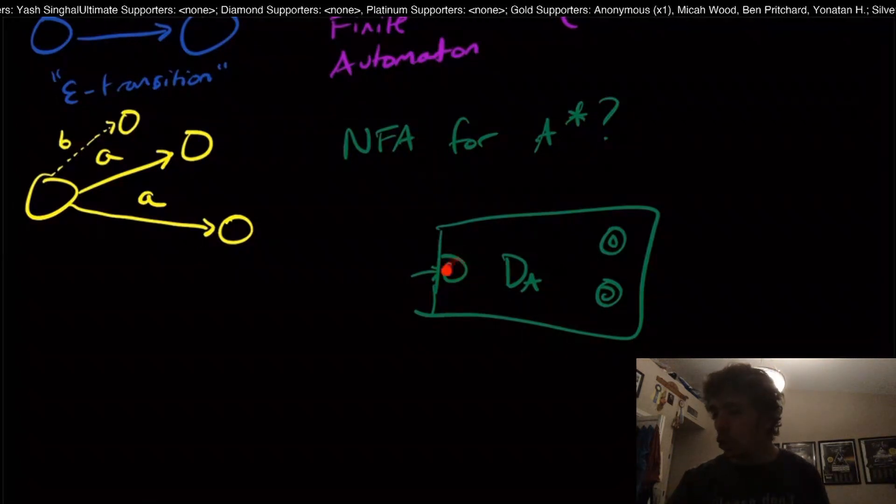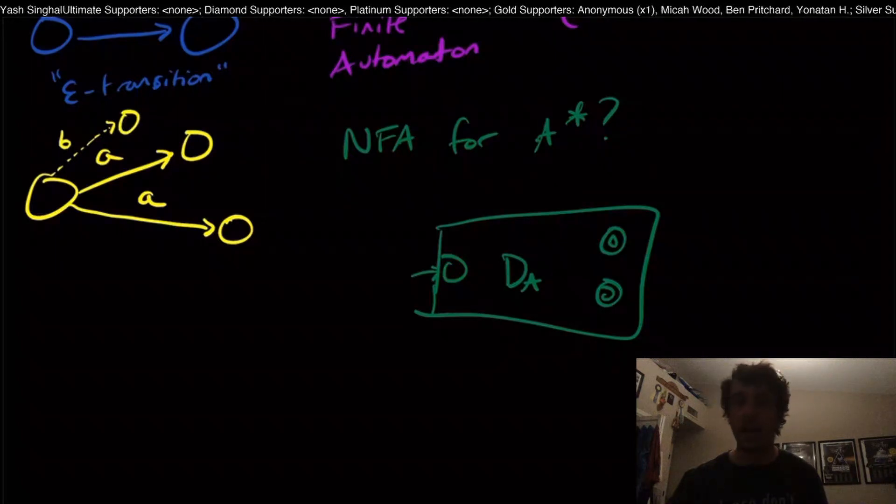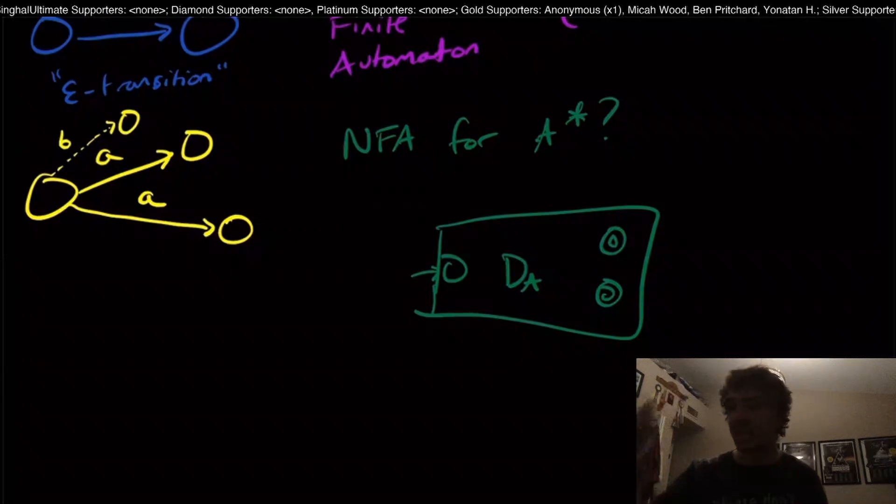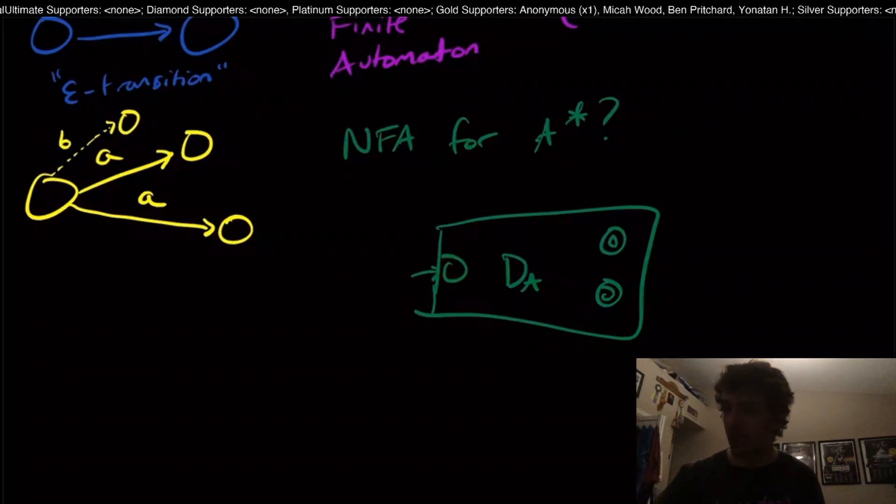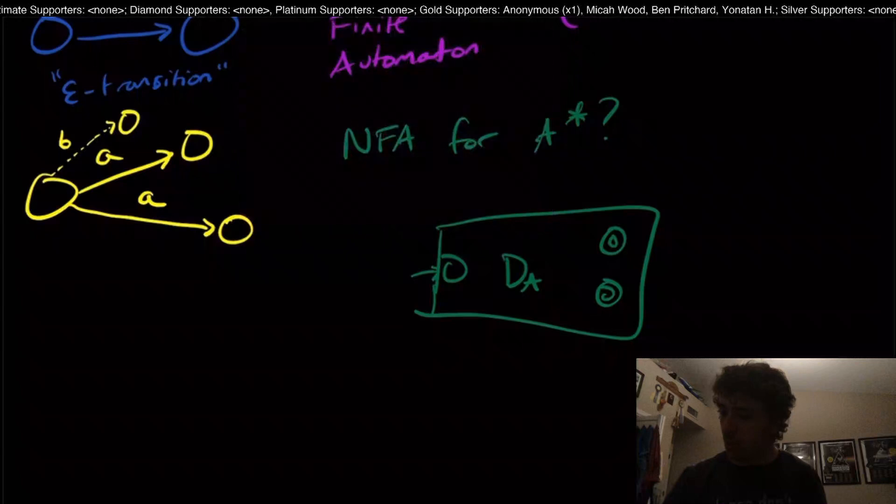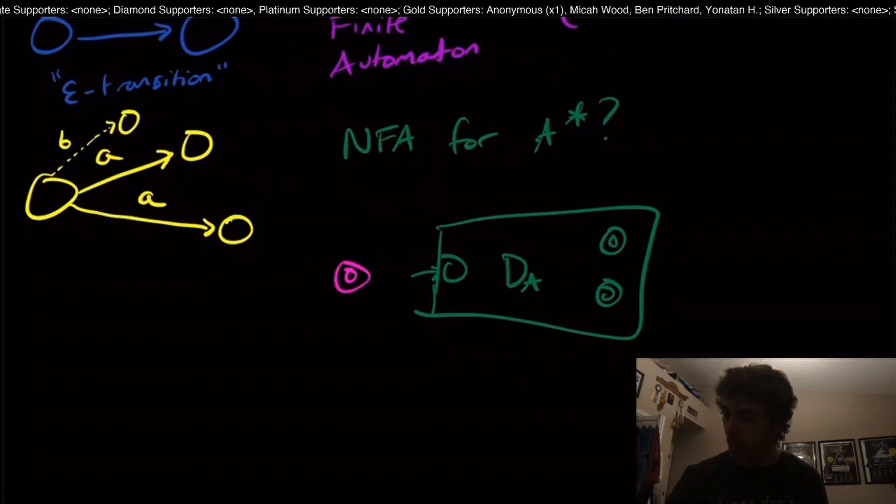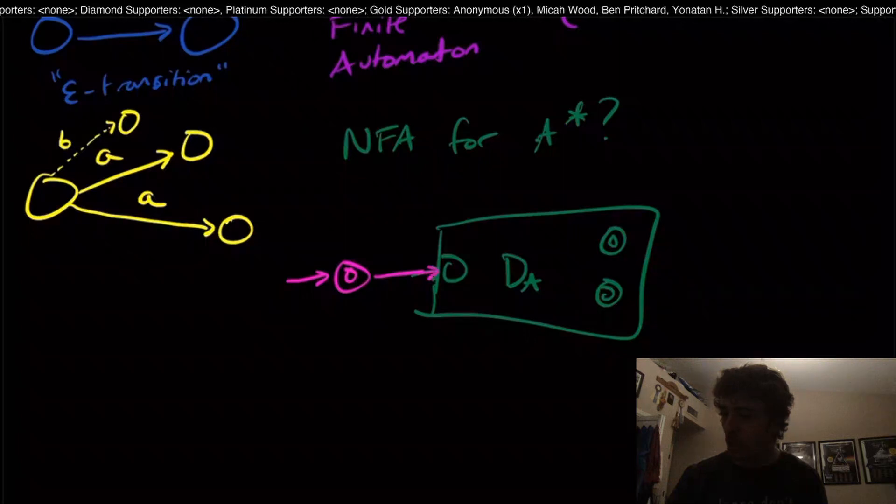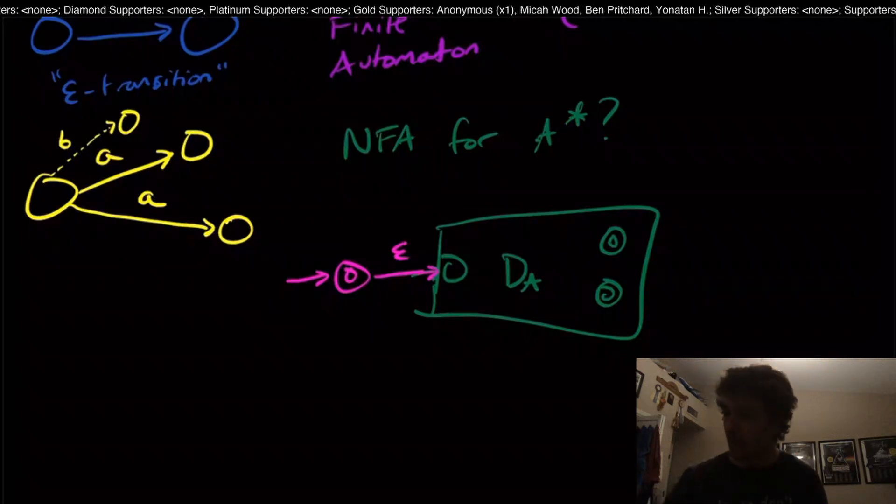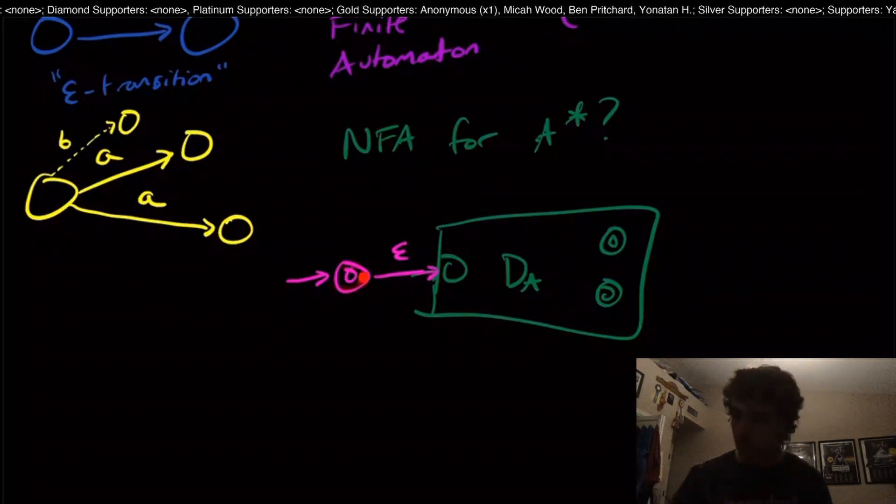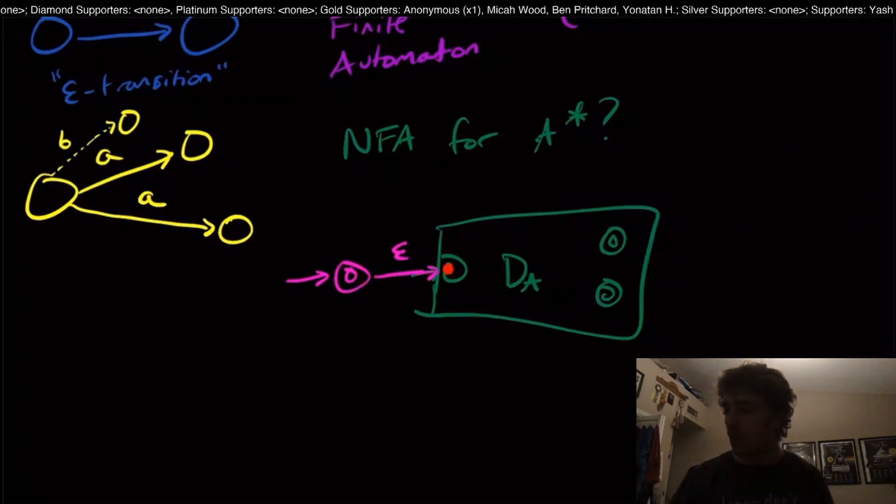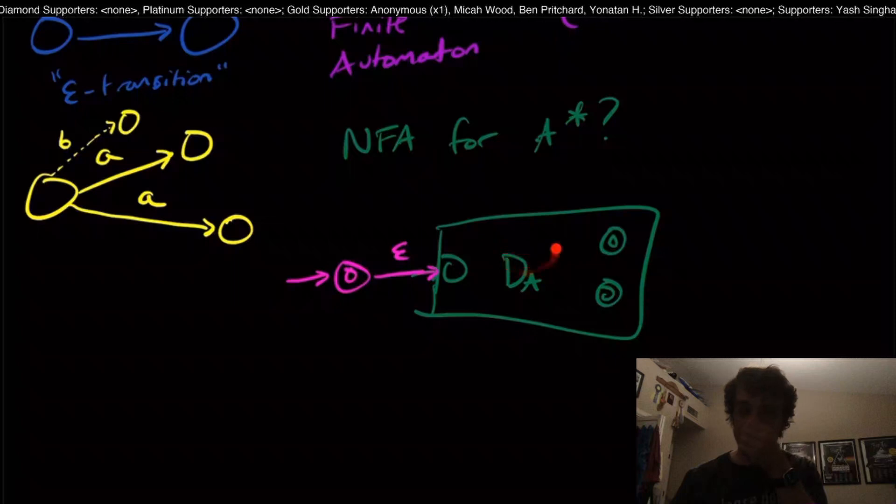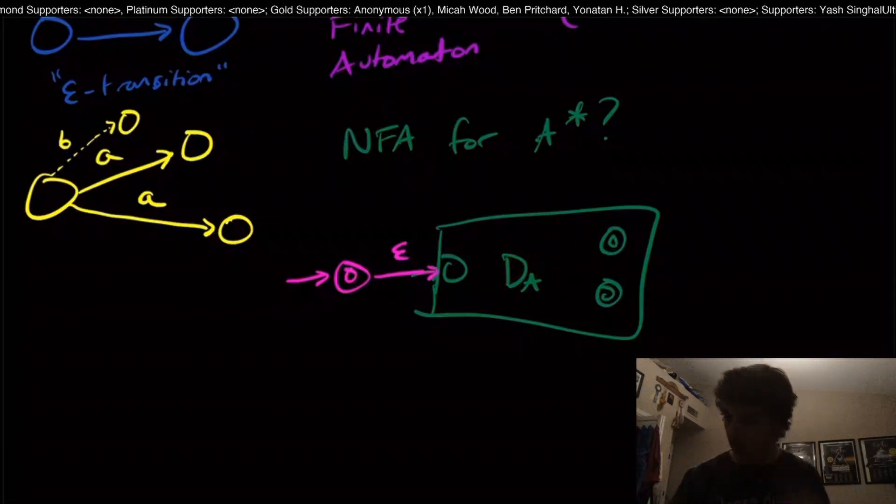Therefore this start state should be final, but I can't just make this state directly final. I invite you to write into the comments what the reason is why I can't make this state directly final. One thing we can do is to make a brand new start state that is final and epsilon our way in. That way we're guaranteed to accept the empty string, but we're not changing any of the behavior inside of the DFA D sub A here.